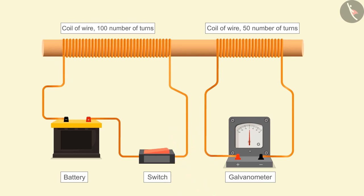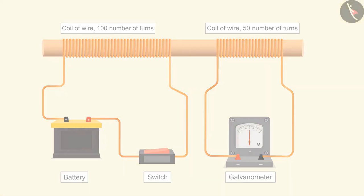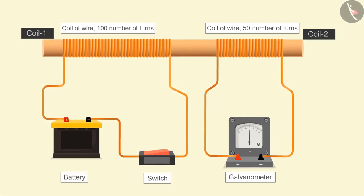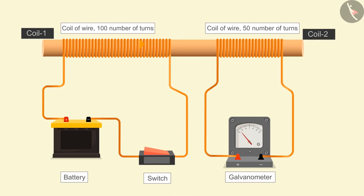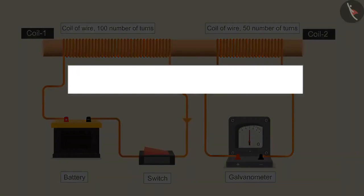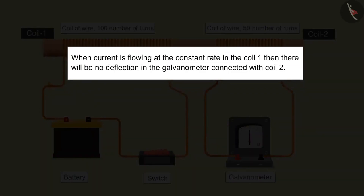If we put off the switch, a deflection can be seen but in the opposite direction. If the direction of the current in coil 1 is reversed and the switch is on, then a deflection can be seen in the needle of the galvanometer but in the opposite direction. We can infer that when the current is flowing at a constant rate in coil 1, there is no effect on the galvanometer connected with coil 2.